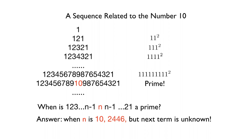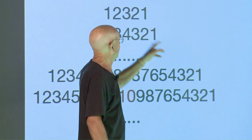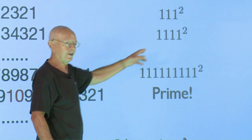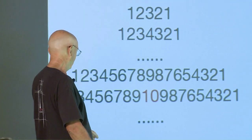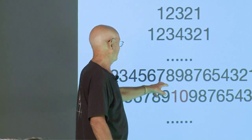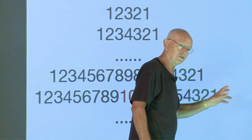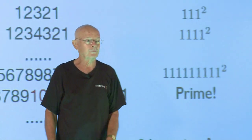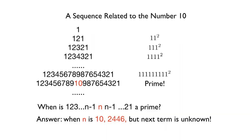So that's not a prime. And 1, 2, 3, 2, 1 is 111 squared. So that's not a prime either. And the next one is 4 ones squared, all the way up to 1, 2, 3, 4, 5, 6, 7, 8, 9, 8, 7, 6, 5, 4, 3, 2, 1, which is 111111111 squared. None of those are primes, obviously, since they're squares, except for 1.